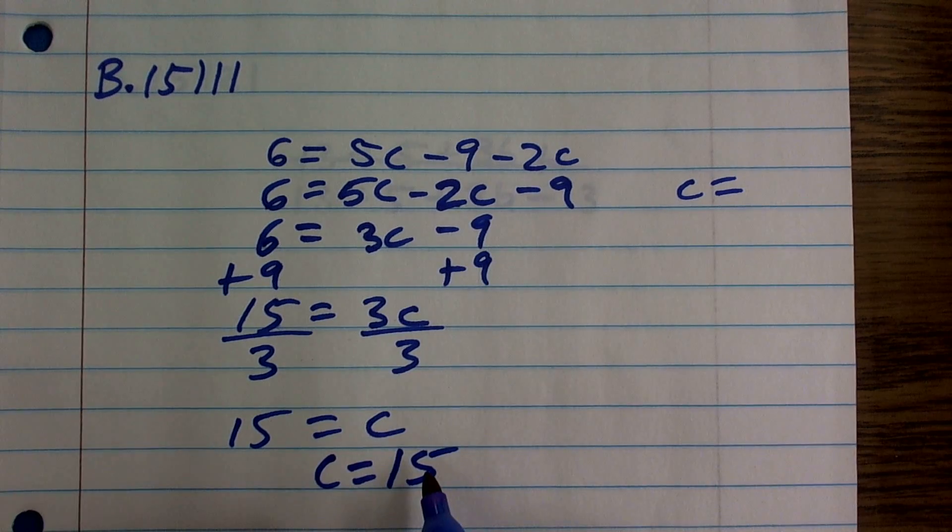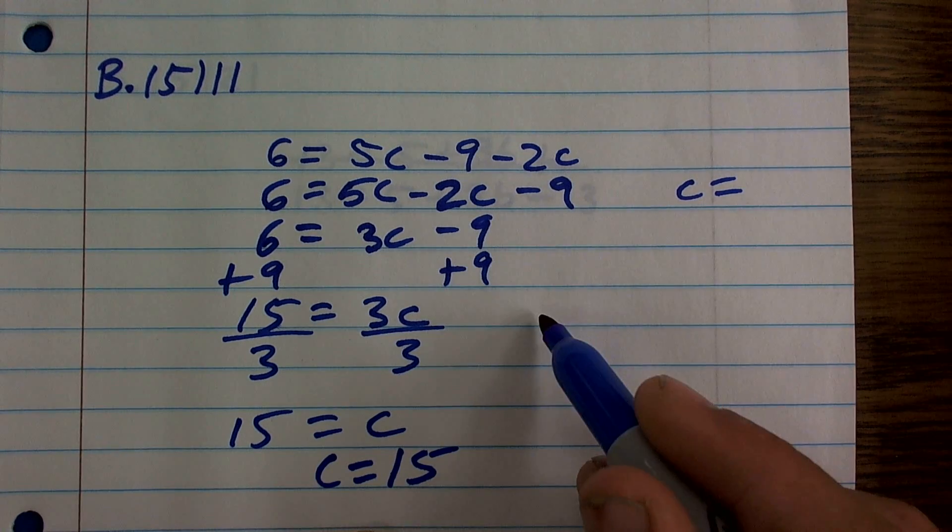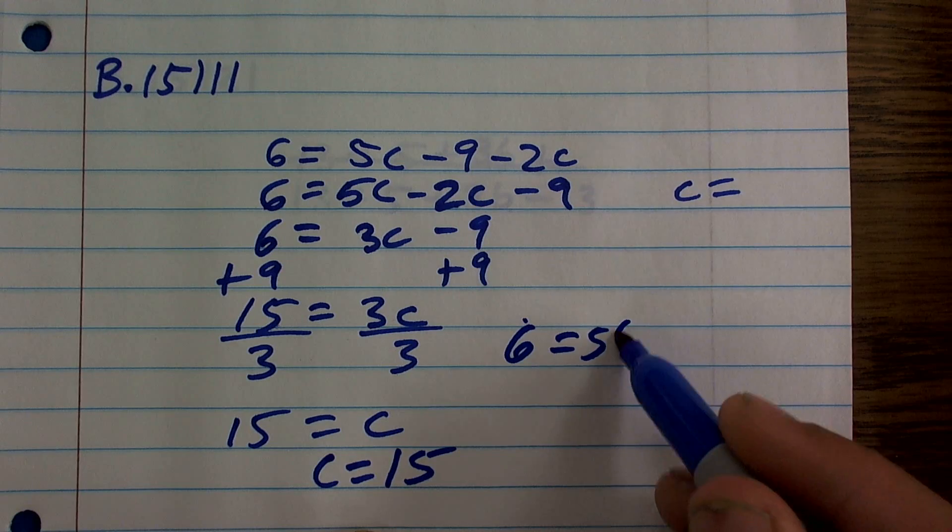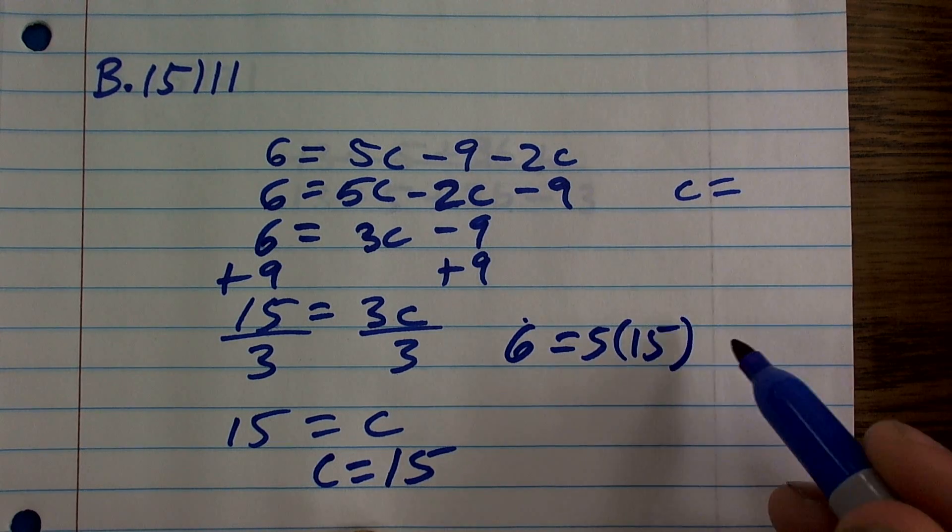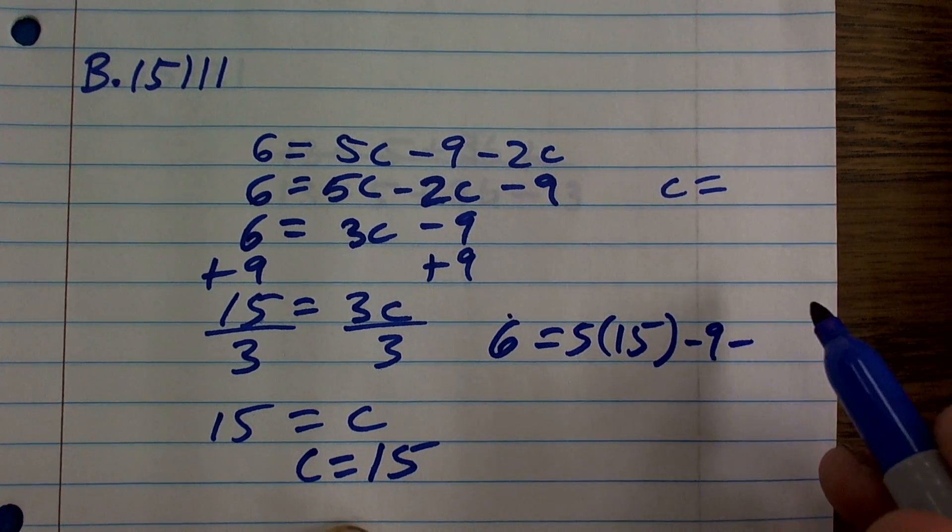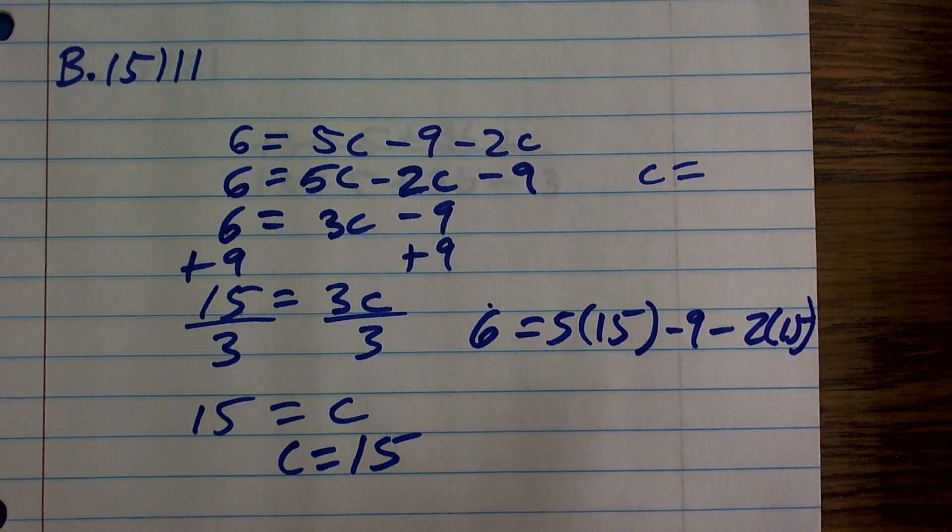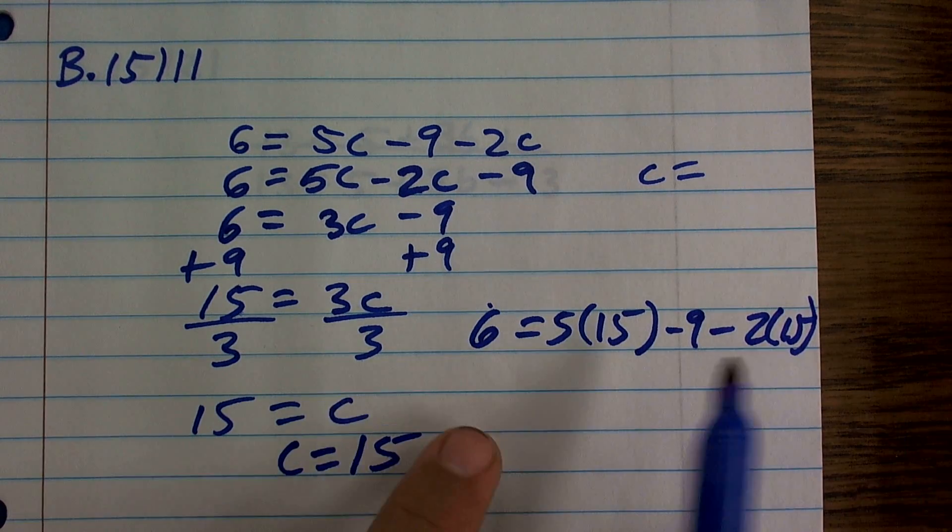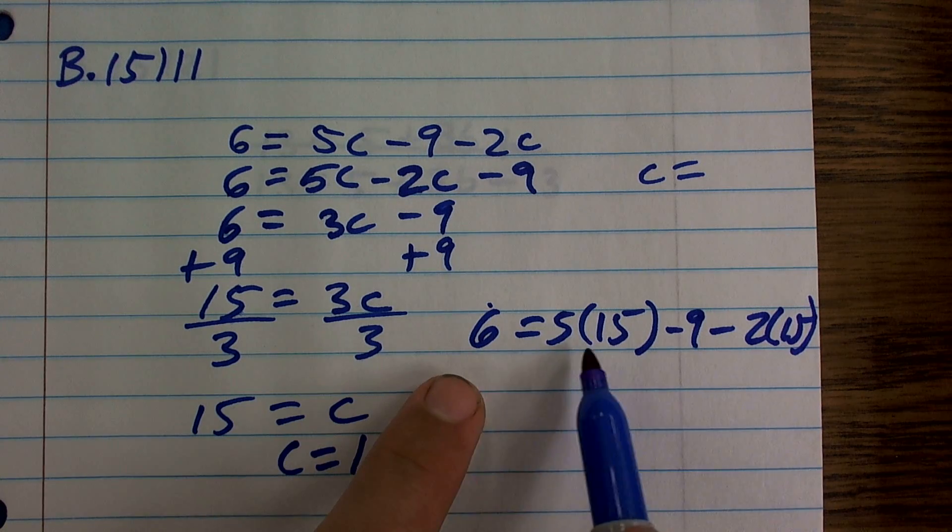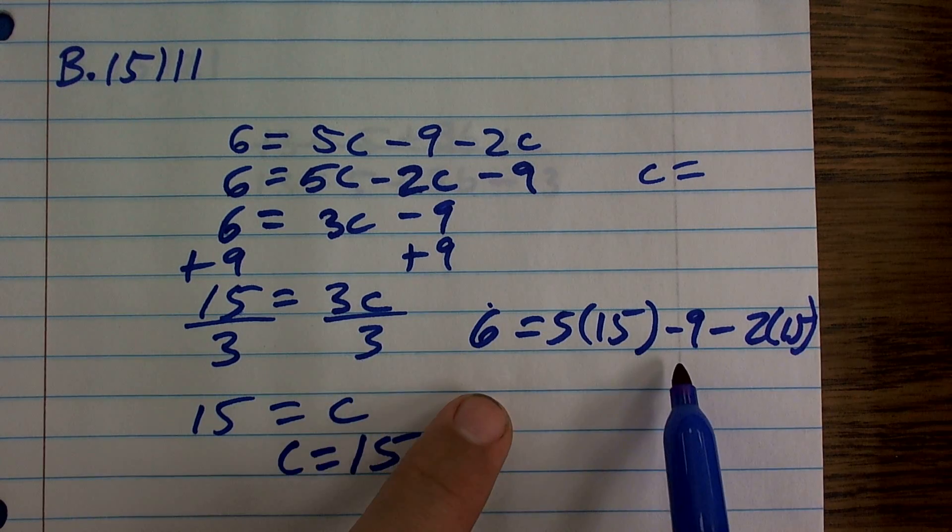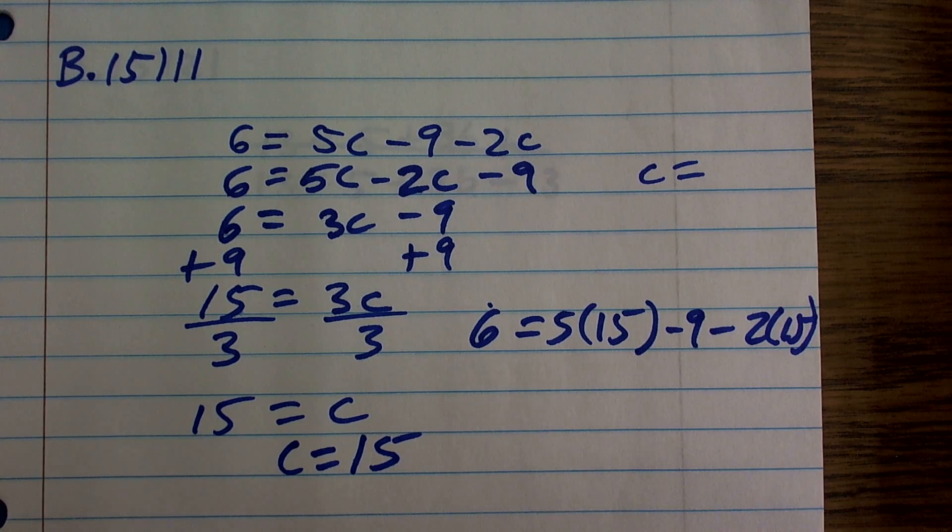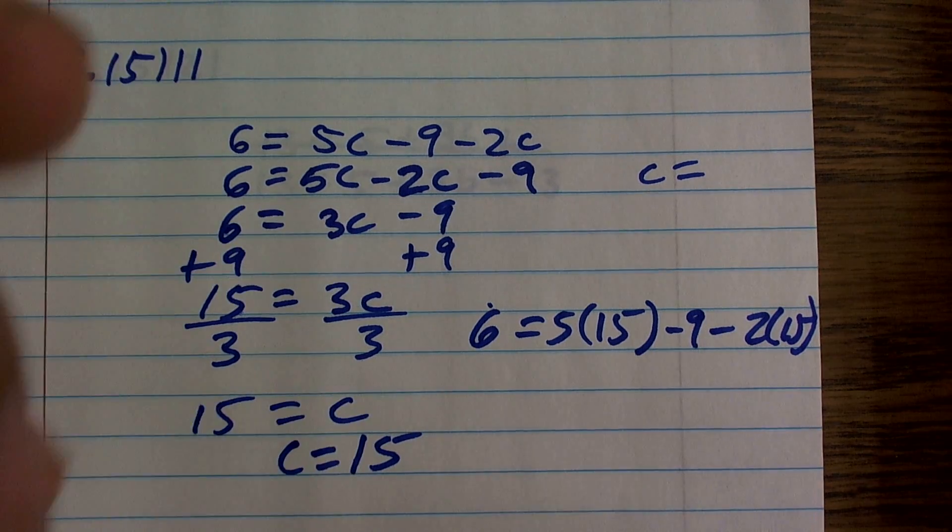If you want to check your answer, you can take 15 and just plug it back in and see if it's true. If it's true, then you did your work correctly. If it's not true, then you messed up somewhere and you need to go back and fix it. That is what happens. When you evaluate this side, it should equal 6. Therefore, that would be a true statement. So there you go.